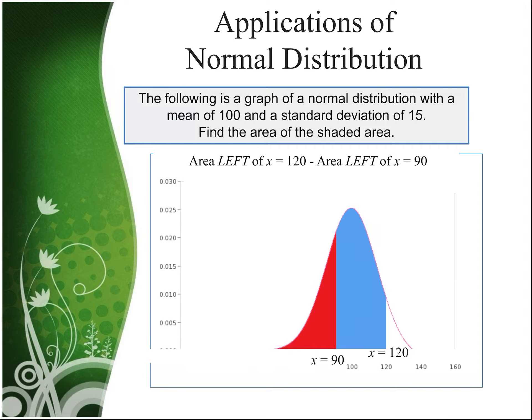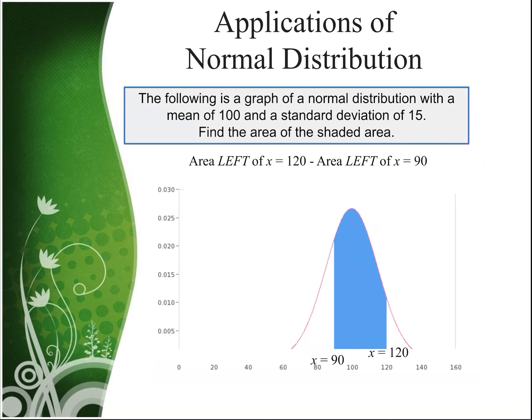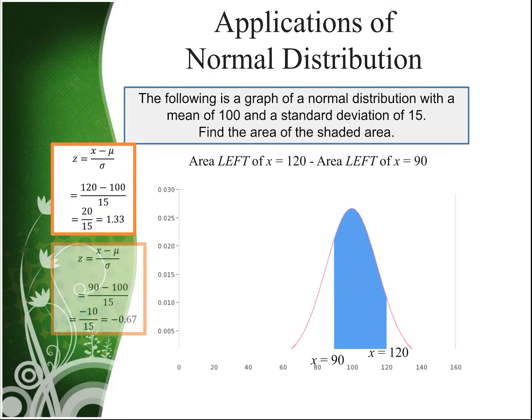So let's do that. The area to the left of x equals 120. To find that, we need to find the z-score. So we'll find the z-score for x equals 120, so 120 minus the mean of 100 is 20, over the standard deviation of 15 gives us a z-score of 1.33. Doing the same thing for x equals 90, we get a z-score of negative .67.